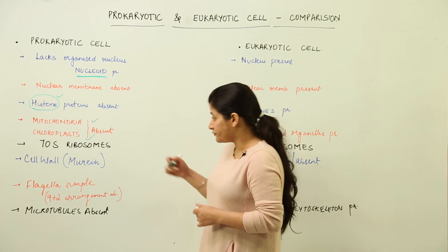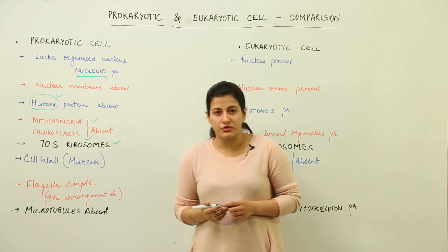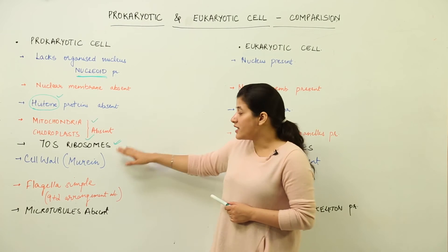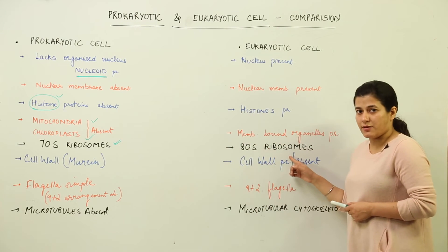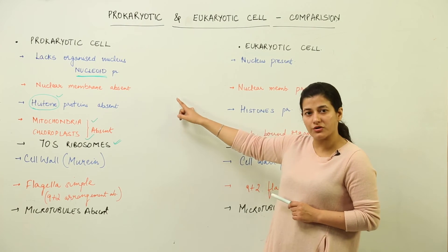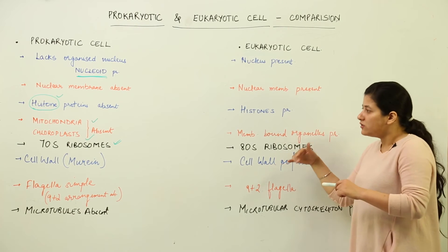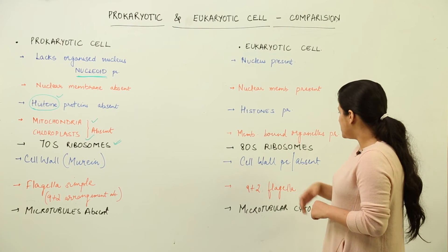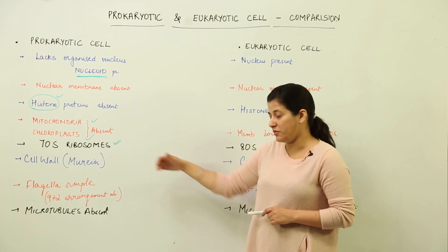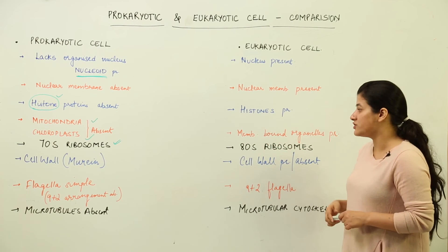Next are ribosomes, which are an important organelle involved in protein synthesis. Prokaryotic cells have 70S ribosomes and eukaryotic cells have 80S ribosomes. This point is to be memorized. An easy way to remember: the prokaryotic cell is the simpler one, so it has the lower number (70S), and the eukaryotic cell is the complex one, so it has the higher number (80S).